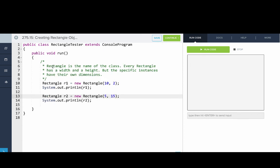Here you can see Rectangle is the name of the class. Every rectangle has a width and height, but the specific instances have their own dimensions. We can see rectangle r1 is 10 by 2, and rectangle r2 is 5 by 15. These are objects. These are instances of the class. There you go, there's another look into objects, instances, and classes.